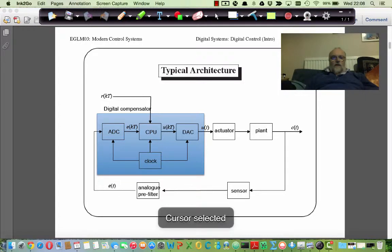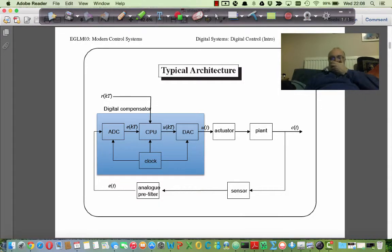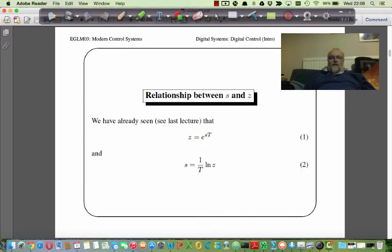So to move on, we already developed this relationship last time. We looked at how S and Z are related to each other. So we have this formula Z equals e to the ST, which gives us a way to map from the S-plane into the Z-plane. And if we want to go the other way, we can use the inverse relationship S equals 1 over T times the natural log of Z.